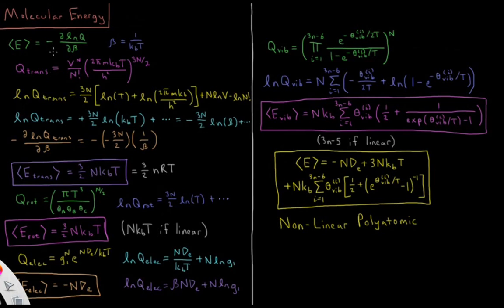All we're really concerned about here are terms that depend on temperature, because beta is 1/kT. Separating temperature-dependent terms from those that do not depend on T, we have ln(Q_trans) = 3n/2 · ln(kT) plus other stuff. Since kT = 1/β, we get ln(Q_trans) = −3n/2 · ln(β) plus terms that don't depend on beta.